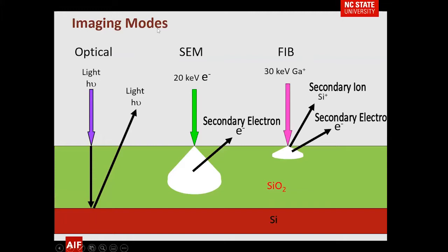Let's look at imaging. If you have an optical image, your light can look through an SiO2 layer — which is transparent to light — at a silicon layer below where there may be features. With a scanning electron microscope you have somewhat limited penetration. With a focused ion beam at 30 keV gallium, your penetration is actually quite small. So you may have a sample where features below the surface are invisible when you put it into the FIB.